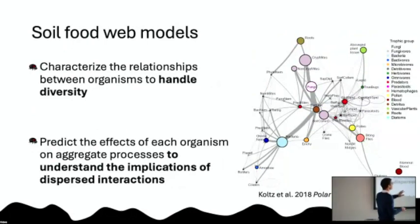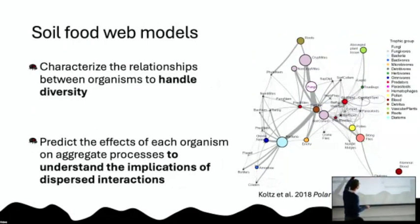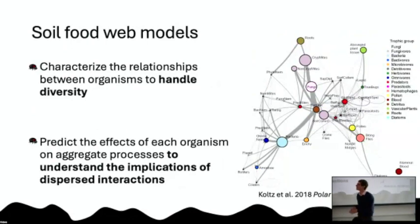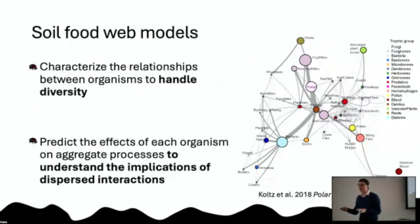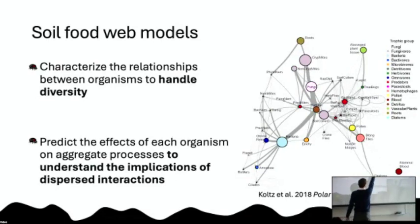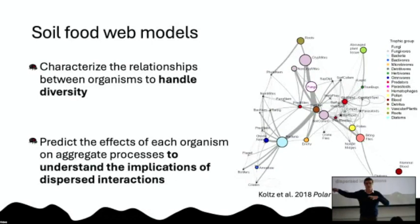This is an example of a simple soil food web model. We have different organisms connected by links representing energy flow — or carbon or nitrogen flow — through the system. This allows us to track what organism eats what and how carbon is moved through the system. The center node here is decomposing organic matter, and we have inputs from roots, plants, and all these things that contribute to the dynamics of soil.